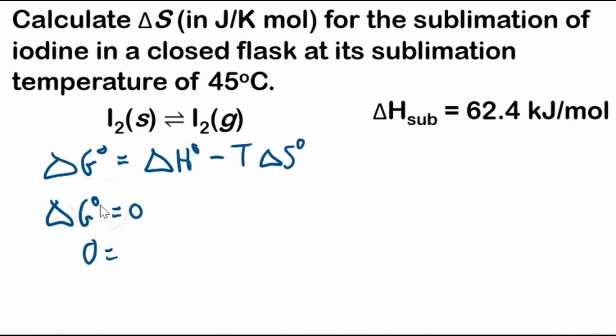So then we can say that zero is equal to the change in enthalpy minus temperature times the change in entropy. And there's no standard state. See these superscripts? They mean it's at a standard pressure of one bar, but we don't know if it's at one bar or not, so I won't put those in there. We're solving for the change in entropy. So we want to rearrange this equation, divide by T, change in entropy equals the change in enthalpy divided by the temperature.